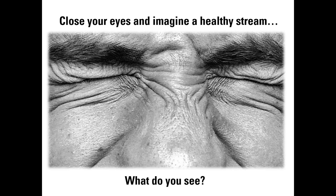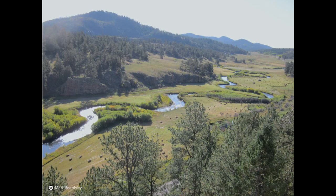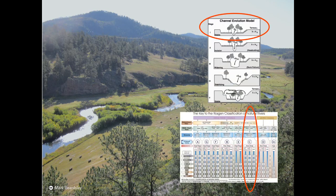Start by closing your eyes and imagine a healthy stream. What do you see? Does it look like this? This is what comes to mind for most people I know — a sinuous channel with riffles, pools, and a line of trees or shrubs along the banks. This image of a nice, well-behaved little stream fits neatly into the conceptual models that fluvial geomorphologists developed for us in the 1980s and 90s.